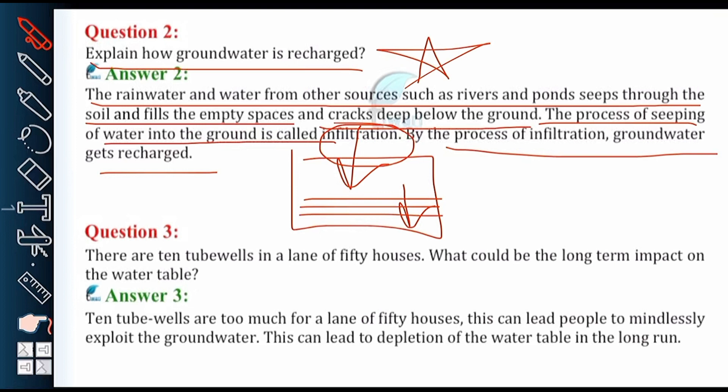It's actually very simple. To explain how ground water is recharged: the first line is very important. Rain water and water from other sources — for example, rivers and ponds — their water slowly seeps underground.